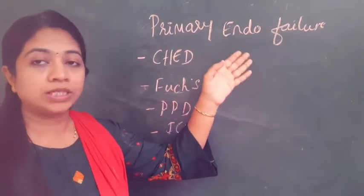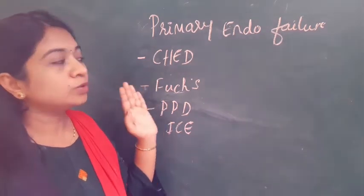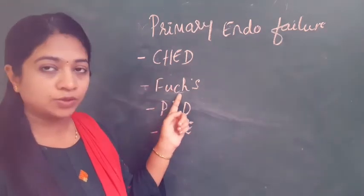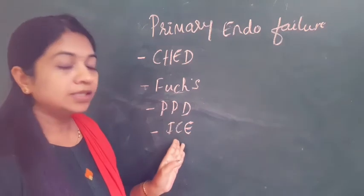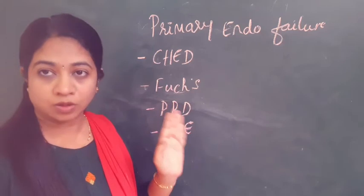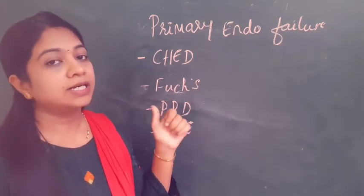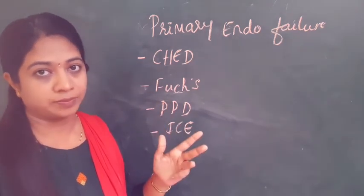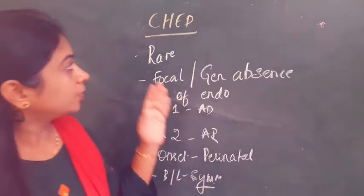The third group of causes is primary endothelial failure, which occurs secondary to endothelial dystrophies such as congenital hereditary endothelial dystrophy (CHED), Fuchs endothelial dystrophy, posterior polymorphous dystrophy (PPD), and iridocorneal endothelial (ICE) syndrome. The common features for this group are that the corneal edema is usually chronic, progressive, stromal, and diffuse.